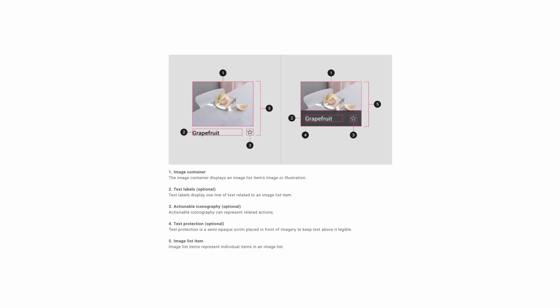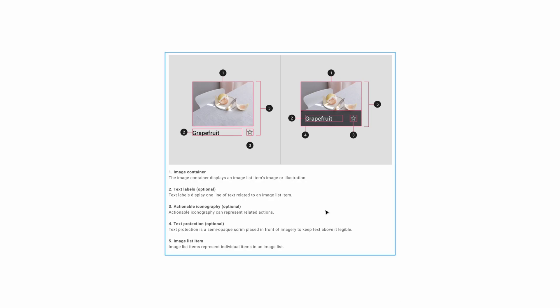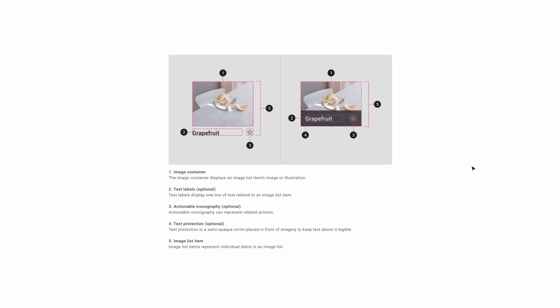All of the lists I showed previously are made up of the same basic component: an image container that can optionally have text labels, iconography, and text protection. To start off, we're going to design this basic component and then assemble it into the different types of grids.